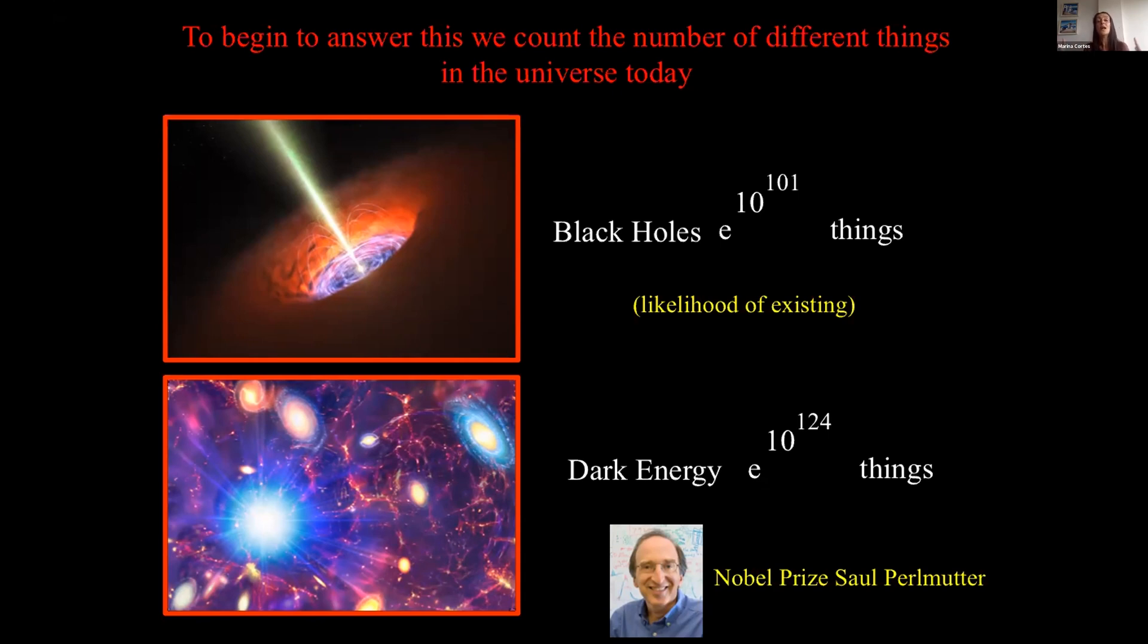You need to go to mathematics. And you must think about it as a likelihood of our universe. So if dark energy dominates the universe, we need to explain the likelihood of our universe, because it is just one part in e to the 10 to the 124. Very, very unlikely.